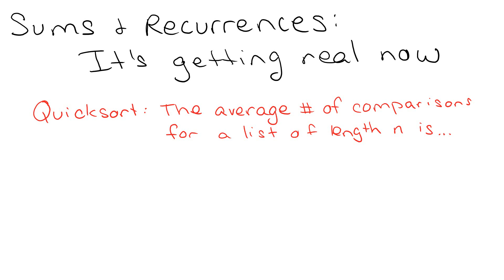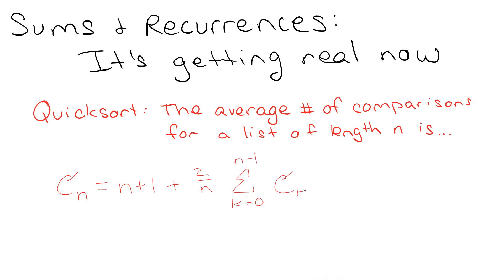In quicksort, the average number of comparisons for a list of length n is given by: C(n) = (n + 1) + (2/n) times the summation of C(k) from k = 0 to n − 1. So we're summing all the previous terms every time, and this is valid for n ≥ 2, because it doesn't take any comparisons to sort lists of length 0 or 1.